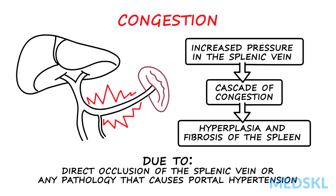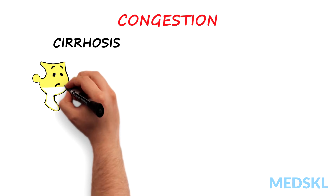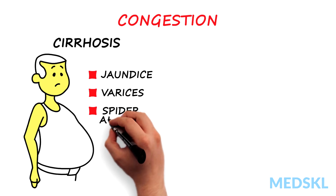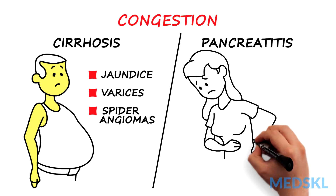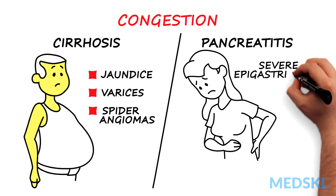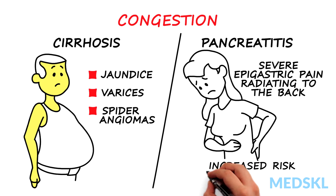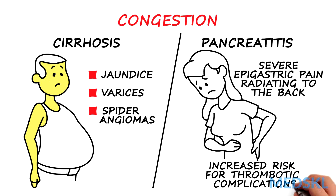Remember to look for the signs and symptoms of these diseases. In cirrhosis, we see jaundice, varices, and spider angiomas. Pancreatitis can present with severe epigastric pain radiating to the back. Identifying an enlarged spleen in this case can point towards an increased risk of thrombotic complications.